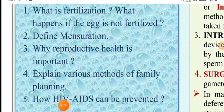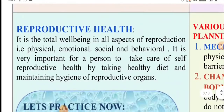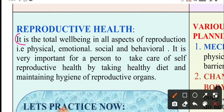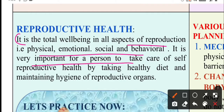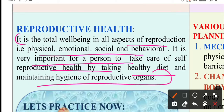Third question is: why is reproductive health important? Reproductive health is very important because it is connected with our overall health. The answer is that it is the total well-being in all the aspects of reproduction — physical, emotional, and social behavioral. It is very important for a person to take care of self-reproductive health by taking a healthy diet and maintaining hygiene of the reproductive organs.